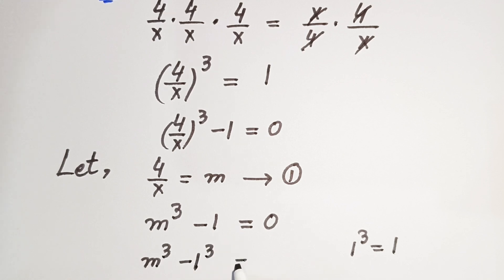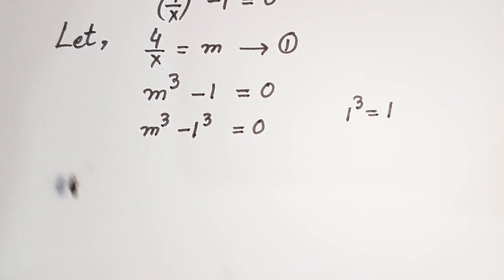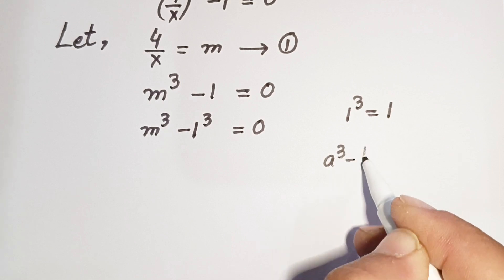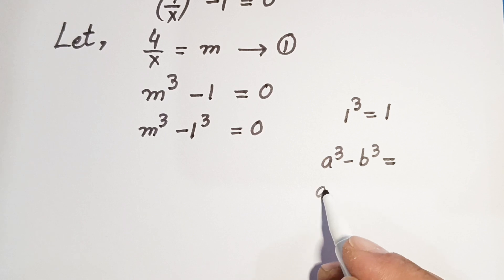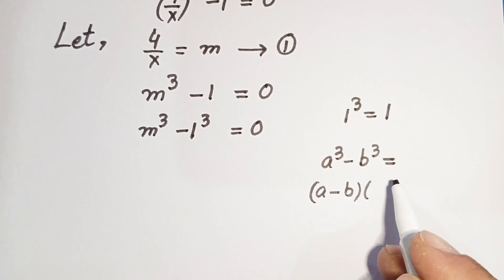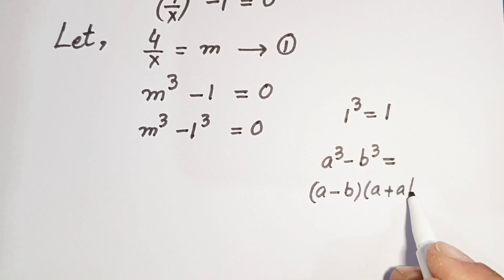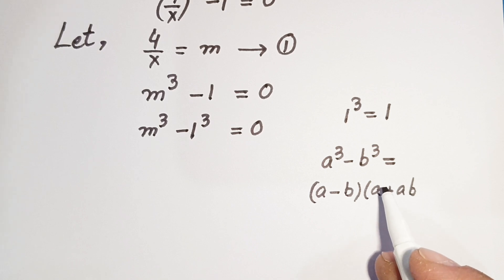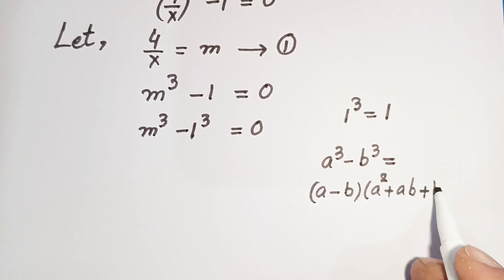Here we apply the difference of cubes formula. If we have a cubed minus b cubed, it equals a minus b times a squared plus a times b plus b squared.